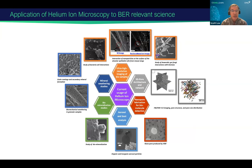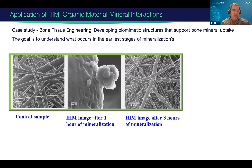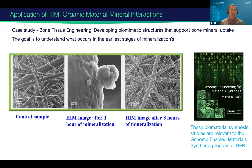I'll show a few examples of what we can do with the helium ion microscope, including imaging of biosamples, mineral weathering studies, biomineralizations, and aerosols. Case one: bone tissue engineering, where you're developing biomimetic structures that support bone mineral uptake. The goal is to understand what occurs at early stages of mineralization. Here on the left is your biomimetic structure without mineralization, then you start the mineralization process and can see what happens as material starts mineralizing and depositing on the surface. While this might be related to biomedical applications, these biomaterial synthesis studies are directly relevant to BER research programs, including the genome-enabled material synthesis program.